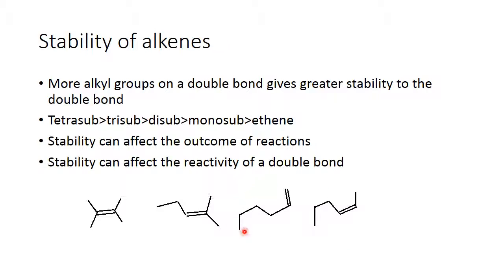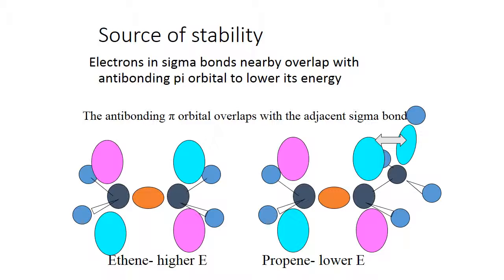This is important because if, in a reaction, two compounds can both form, the more stable one is more likely to form. Likewise, if you have both a disubstituted and a monosubstituted alkene in one molecule and they go to react, the less stable one — the monosubstituted one — will react faster.